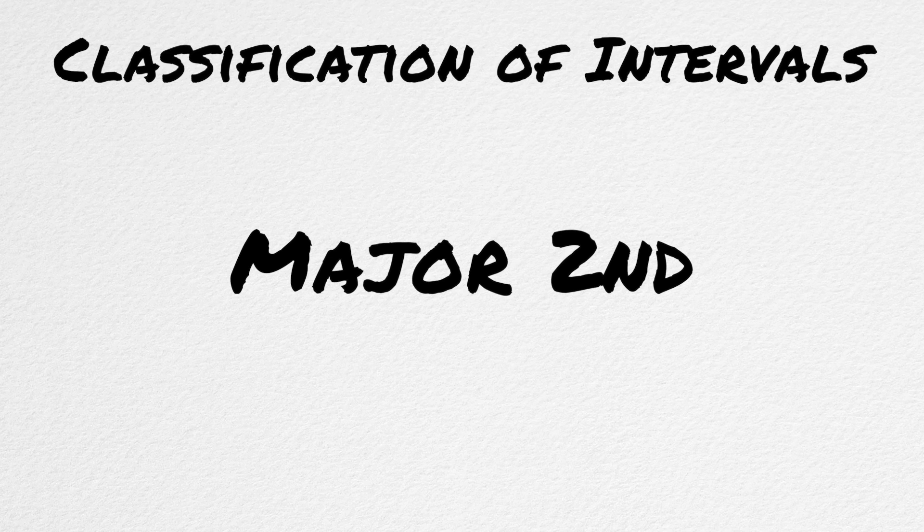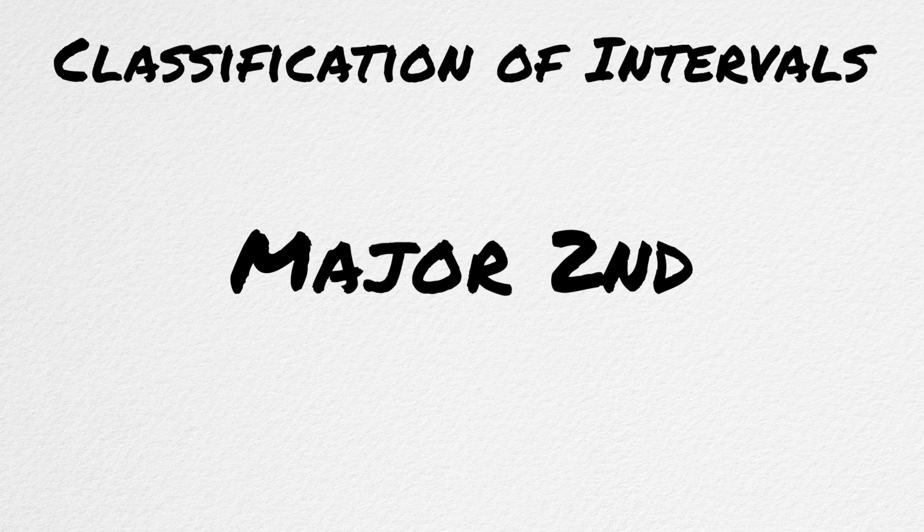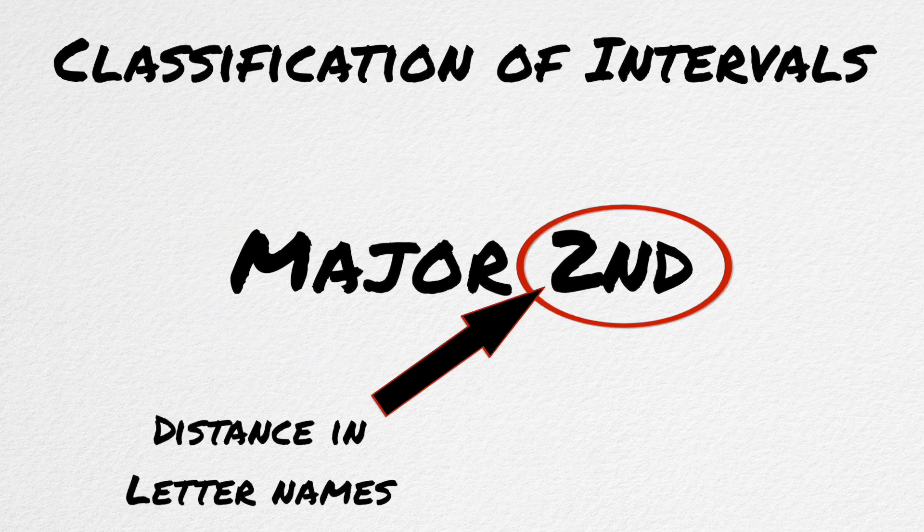Classification of intervals. This is where most people get confused, because it's not exactly straightforward. All intervals are made up of two components, a number and a quality. The number is simply the amount of letter names between the letter name you are on and the letter name you are going to, with the starting letter name being 1.